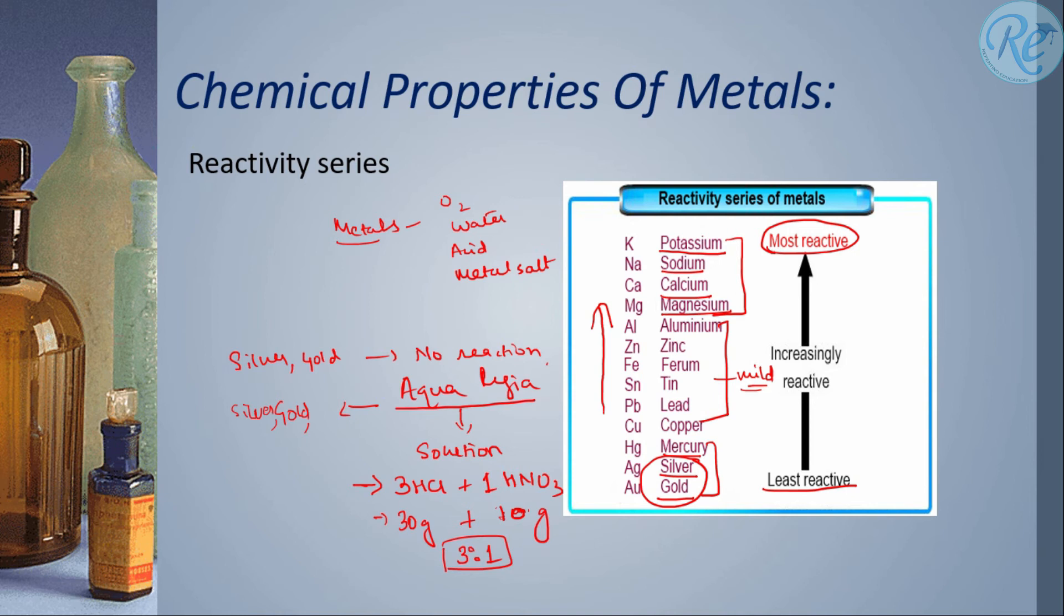Now this aqua regia, it's a very highly concentrated and fuming liquid which is used to dissolve very low reactive metals such as silver, gold or platinum also.